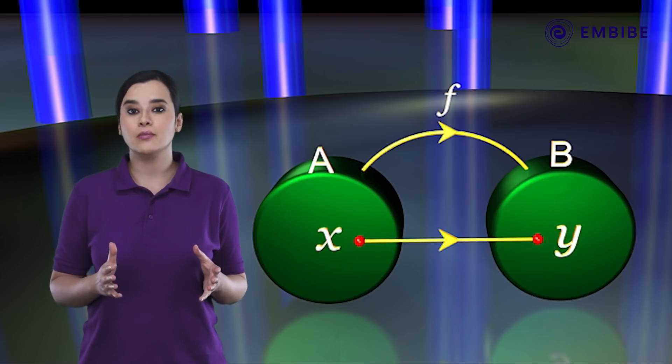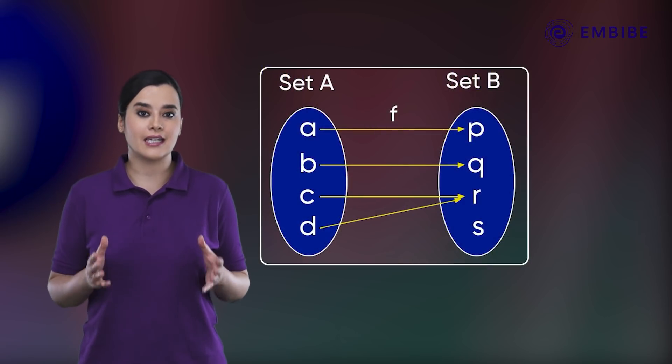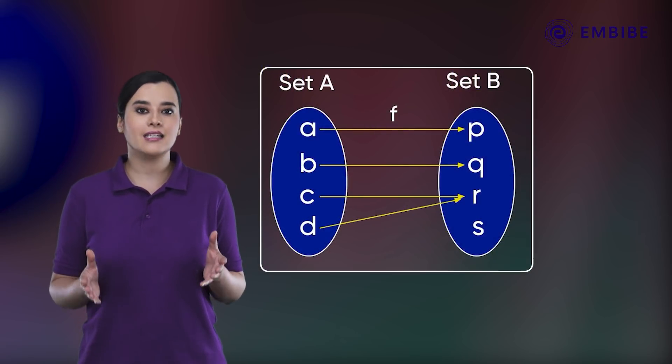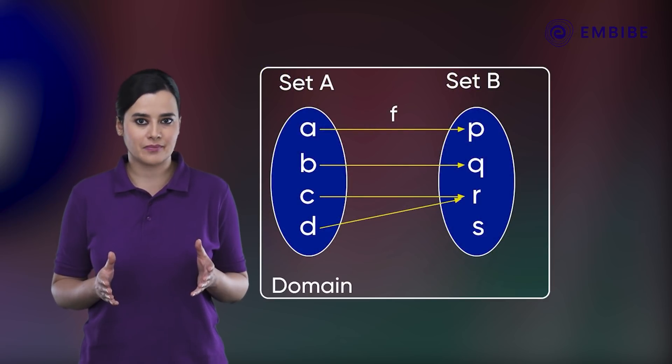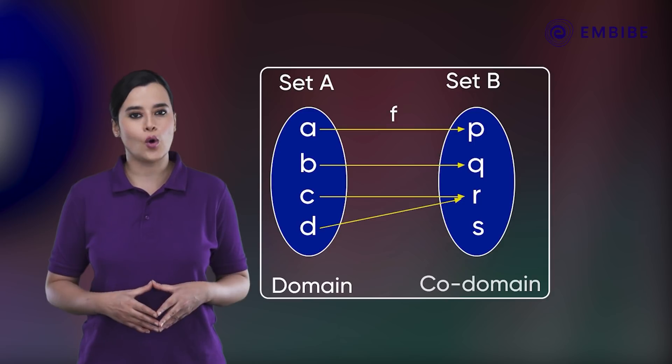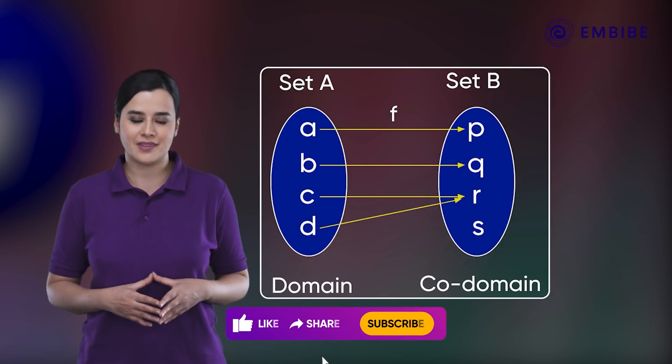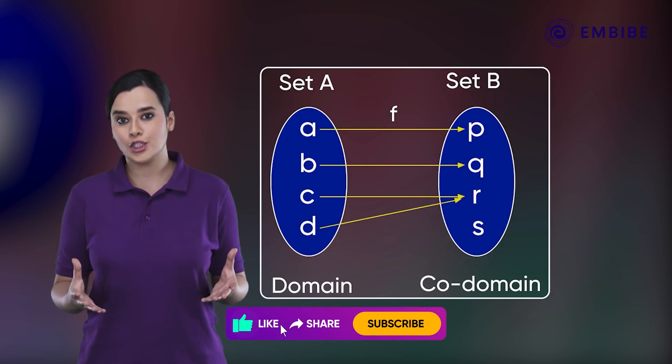Let there be a function defined between two sets A and B. Here, set A has a special name and it is called the domain set, and set B is called the co-domain set. The value which a function can give at some input is what we call the range of the function.